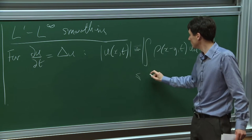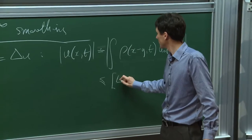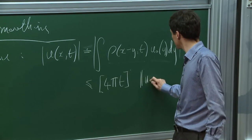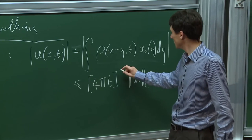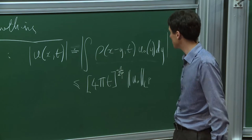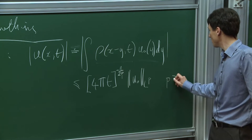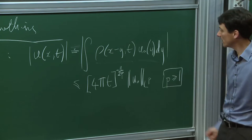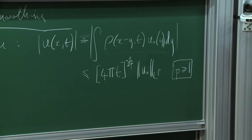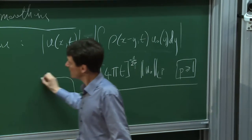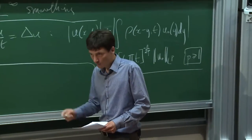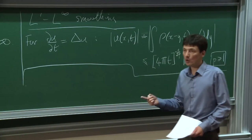For the ordinary linear heat equation this is trivial: you write u as a convolution of the heat kernel with initial data and bound it by Hölder's inequality, getting a bound like (4πt)^(−n/2p) times ‖u₀‖_{Lp}. The key point is that p = 1 works. But this fails completely for the logarithmic fast diffusion equation. The moral is: if you start with a delta function, you flow staying as a delta function because of the non-linearity.